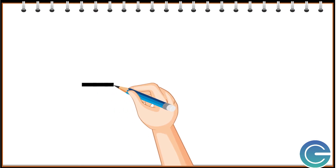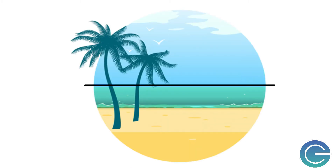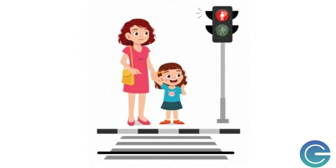This is a horizontal line. Horizontal lines go from left to right or right to left. It looks like the horizon or a pedestrian lane. The horizontal line is also called the sleeping line.